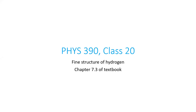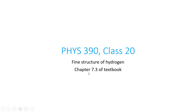Welcome to Physics 390, class 20. This class will be on the fine structure of hydrogen. The fine structure of hydrogen refers to corrections to the energy levels of hydrogen involving two effects: correcting for the fact that electrons are moving fast using relativistic kinetic energy, and correcting for the spin-orbit interaction, which has to do with the spin magnetic moment of the electron moving in an effective magnetic field generated by the proton it rotates about. This material comes from Chapter 7.3 of the textbook.